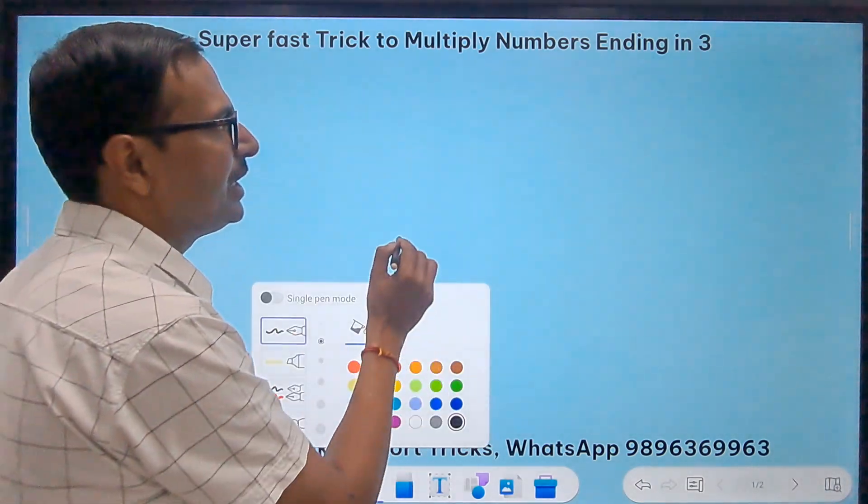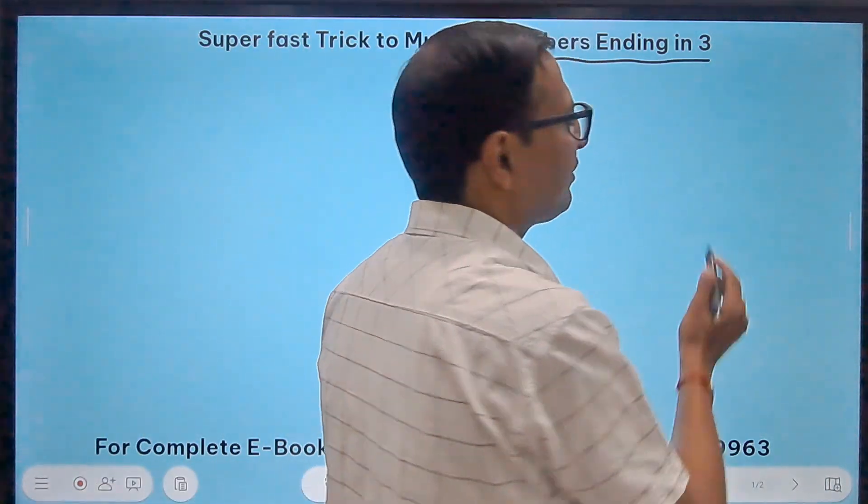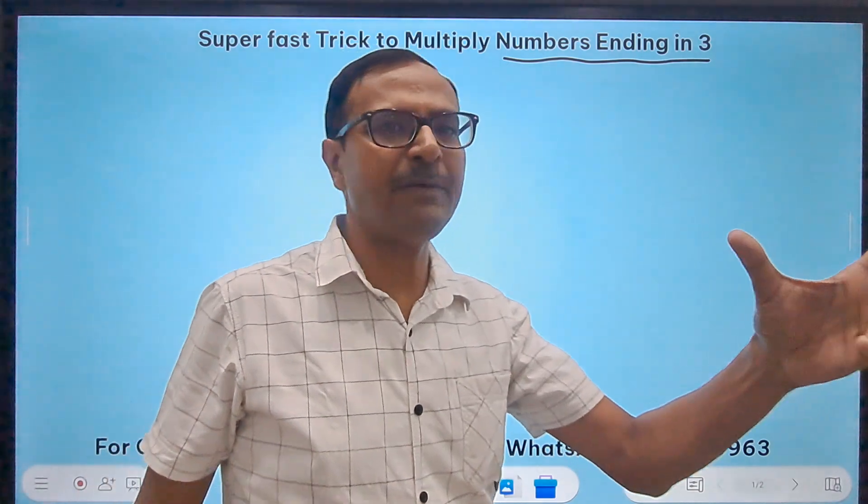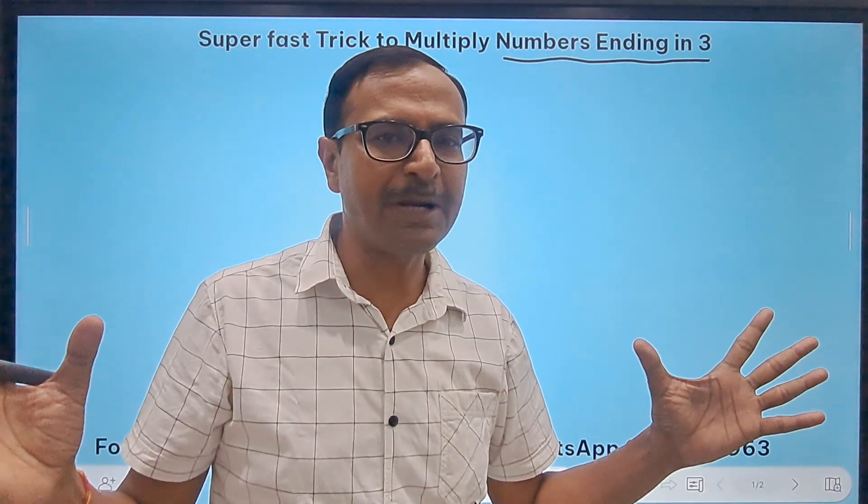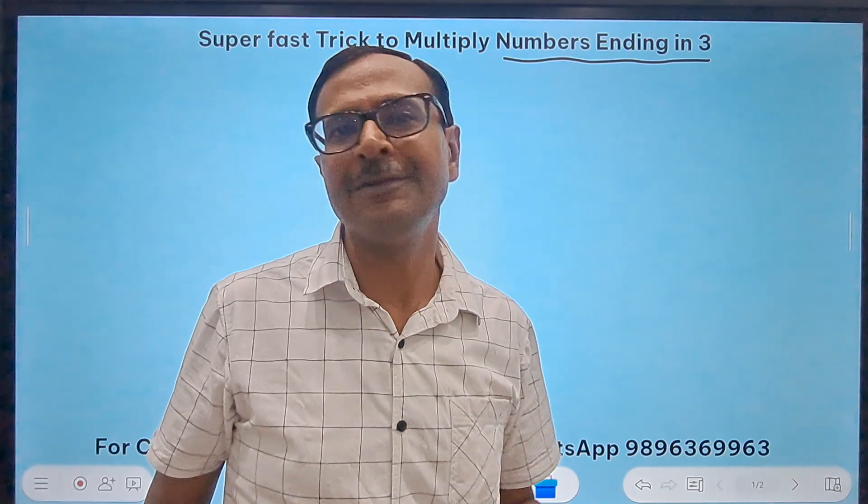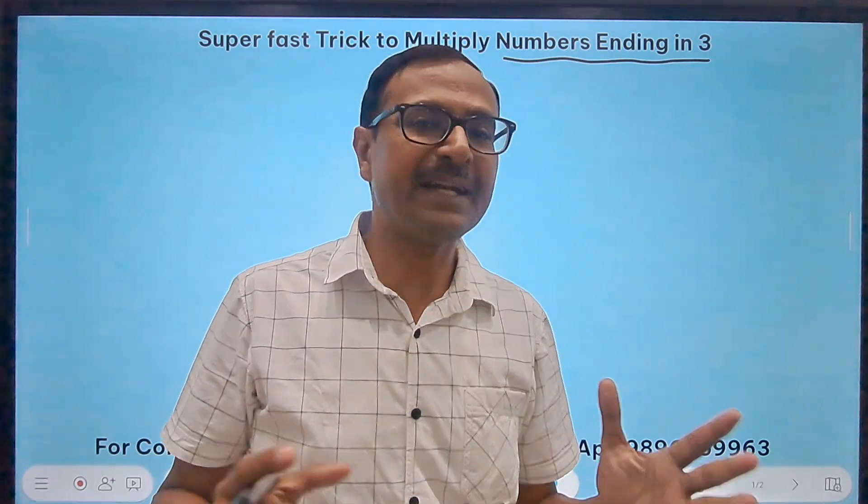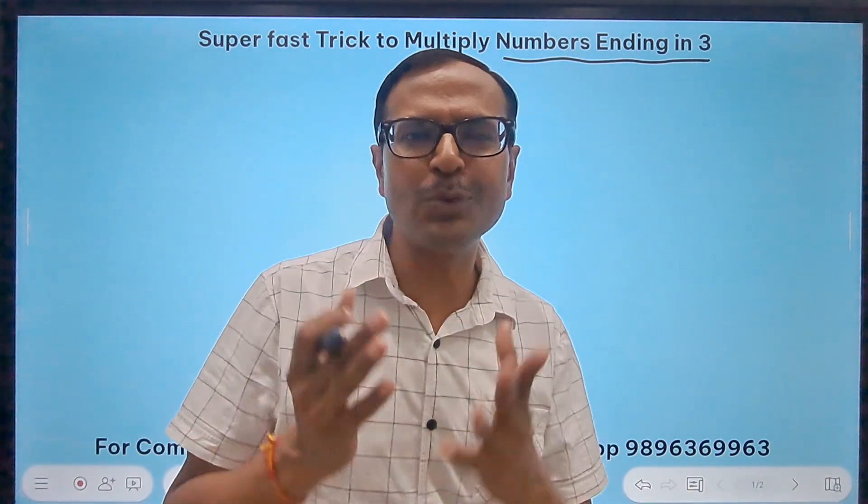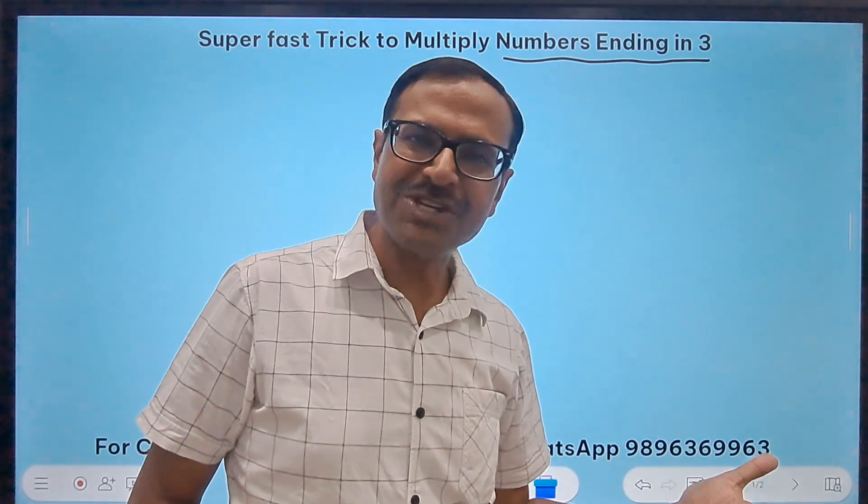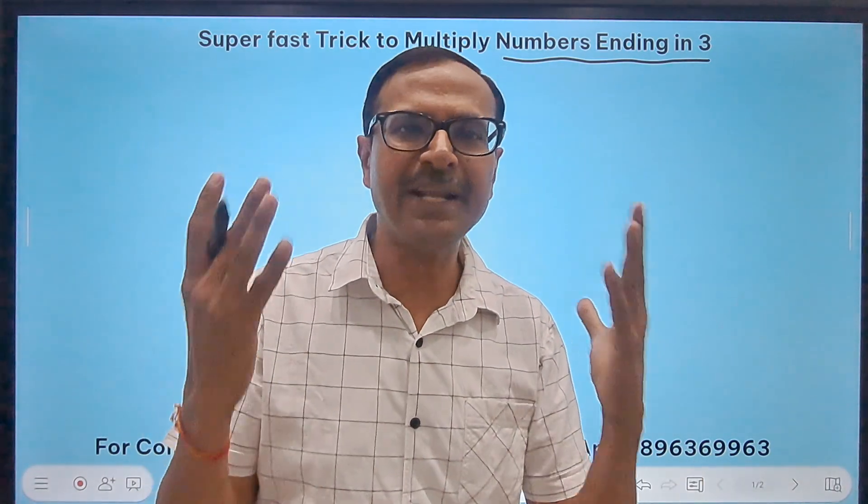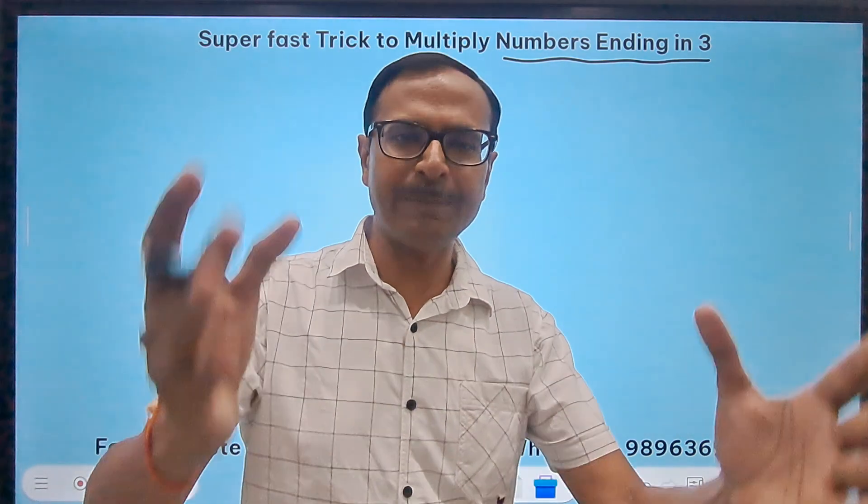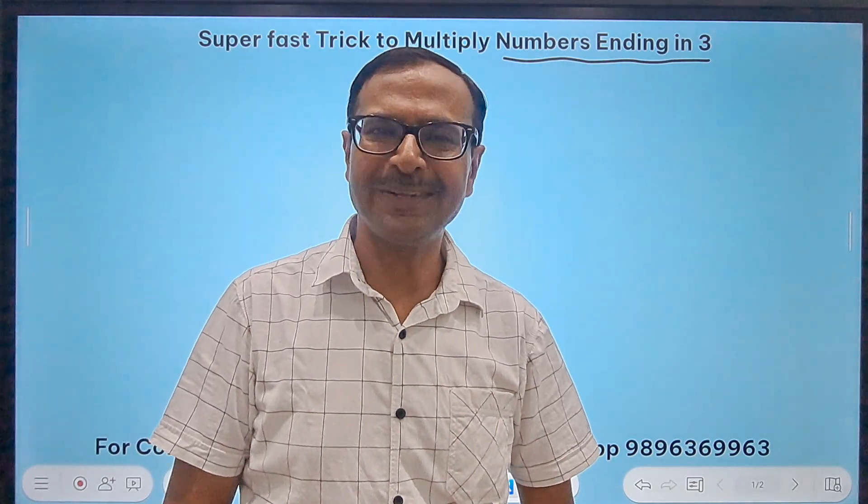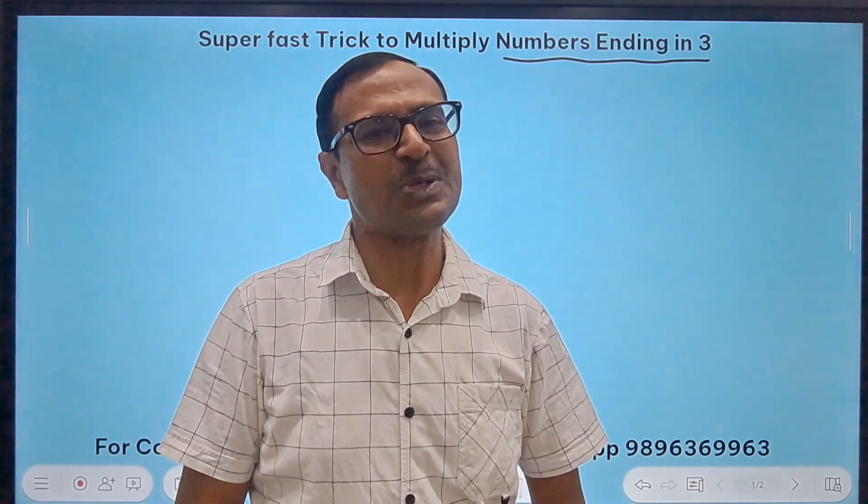Numbers ending in 3, like 83 and 143, you will be able to do that in a single line. No traditional multiplication, no calculators required. Watch the entire video. If you have not clicked the subscribe button till now, please do it friends, and click the bell shaped icon also so that you keep on getting all the notifications of these useful and super amazing short tricks on this channel.